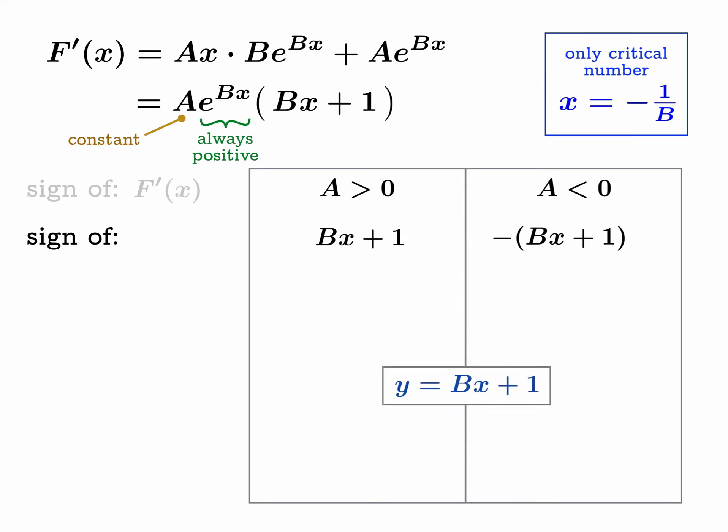Now we ask ourselves, what does the graph of y = Bx + 1 look like? If B is a constant, that's pretty easy. This is a linear function. If B is greater than zero, this is going to have an upward slope. We know it crosses at negative one over B. There's our quick sketch of the graph.